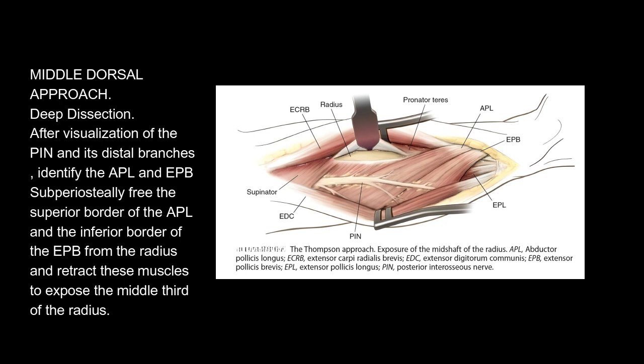Identify the APL and EPB. Sub-periosteally free the superior border of the APL and the inferior border of the EPB from the radius, and retract these muscles to expose the middle third of the radius.